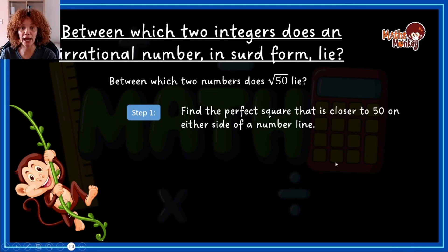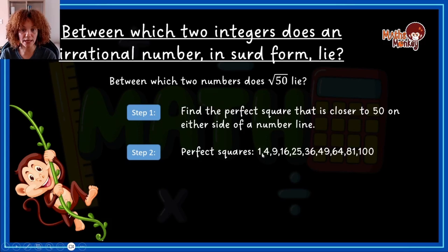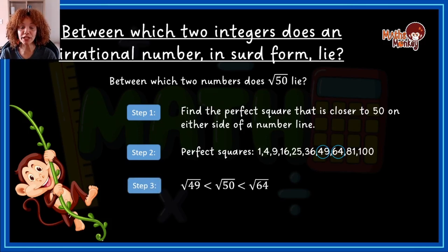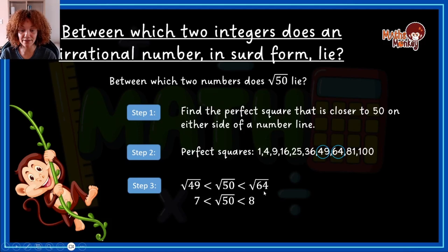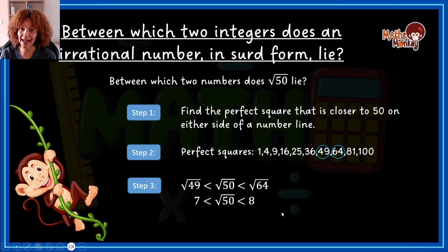You start by looking for the perfect squares closest to 50 on either side of the number line. Writing them down, you find 49 is to the left of 50 and 64 is to the right. You then place less-than signs between them and find the square roots: √49 = 7 and √64 = 8. So we've discovered that √50 falls between 7 and 8 — that's your answer.